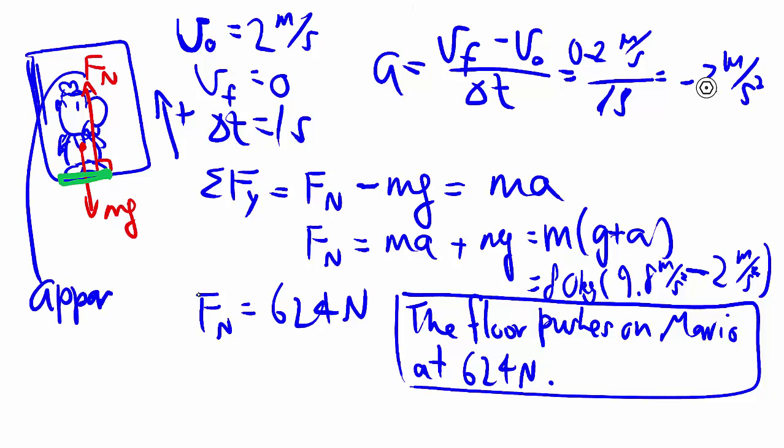In fact, we call this Fn, usually in these cases, we call that the apparent weight. It's the weight that seems to be. Of course it's not his true weight because he's moving. Weights you normally take when you're not moving. But that explains why when you ride an elevator, try and notice this next time.